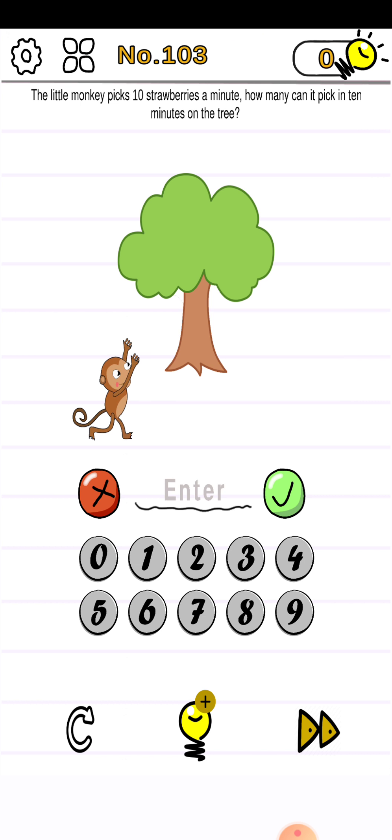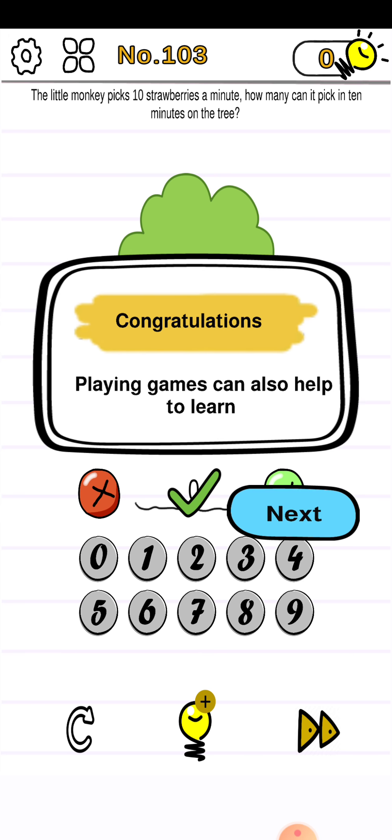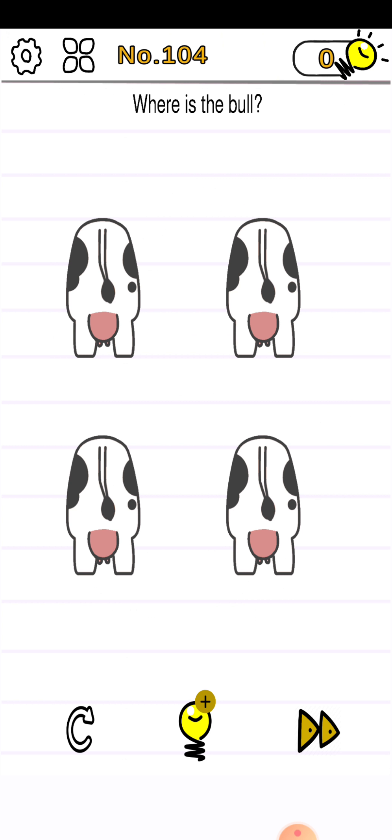Let's proceed to level 103. The little monkey picks 10 strawberries a minute. How many can it pick in 10 minutes on the tree? So the answer is zero. Click on the tick mark and the level will be cleared.